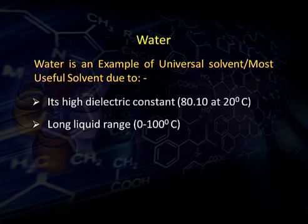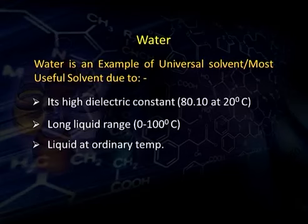Water has a long liquid range from 0°C to 100°C. At 0°C, ice becomes liquid, and at 100°C it starts to vaporize — so the temperature range from 0 to 100°C is where water remains as a liquid. Additionally, water is liquid at ordinary temperature, so reactions at room temperature can be easily carried out without much heating.